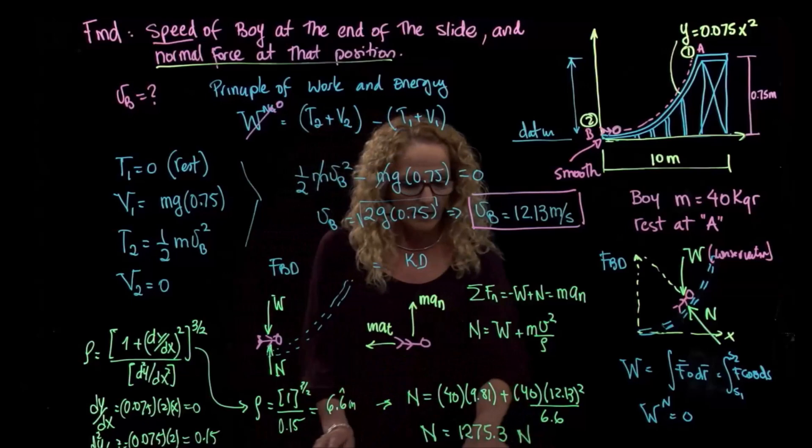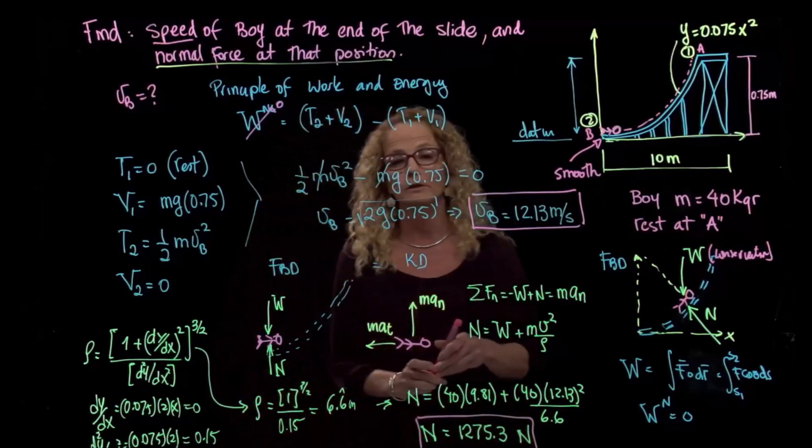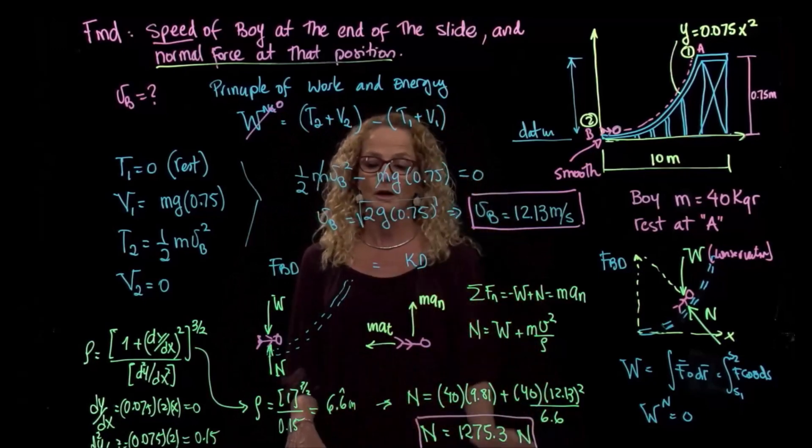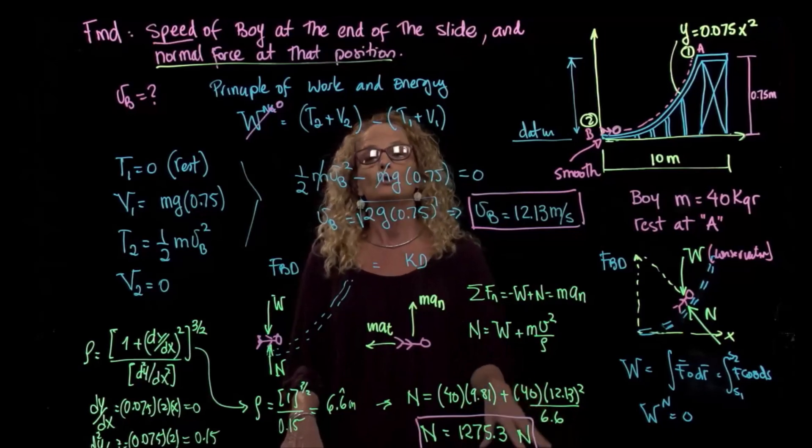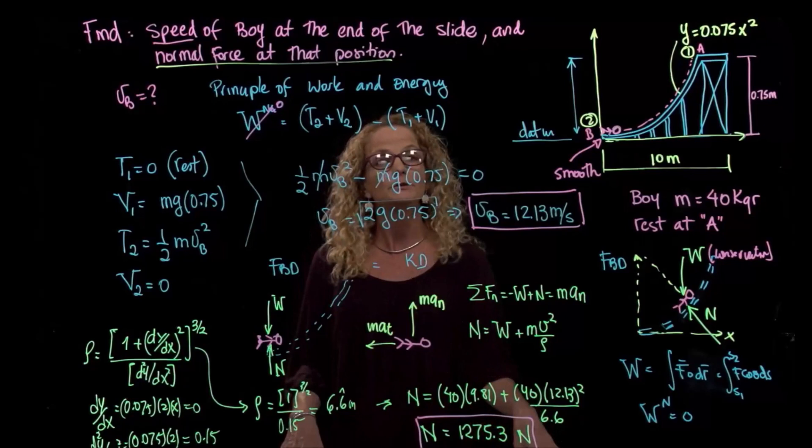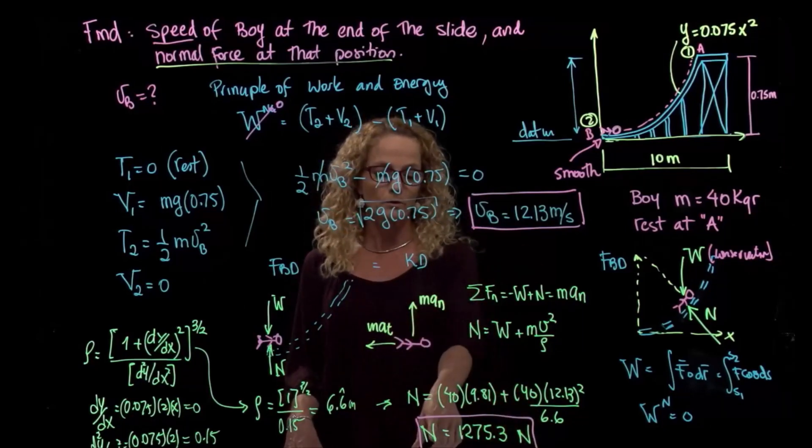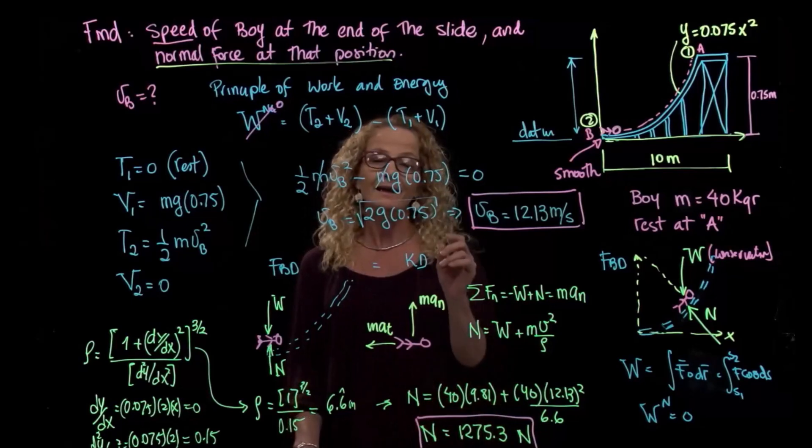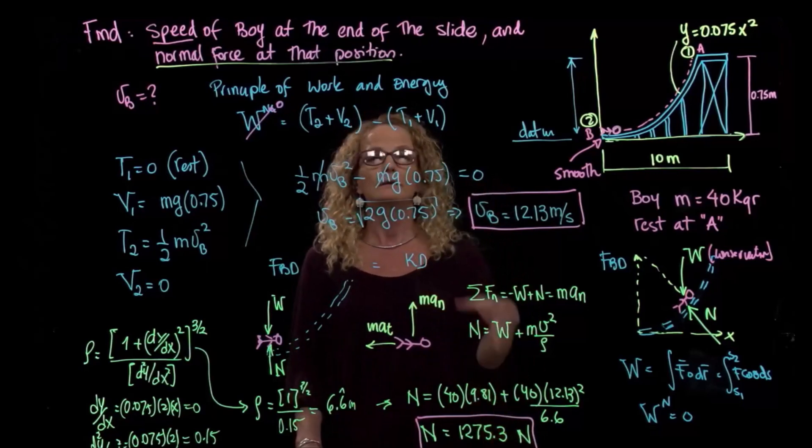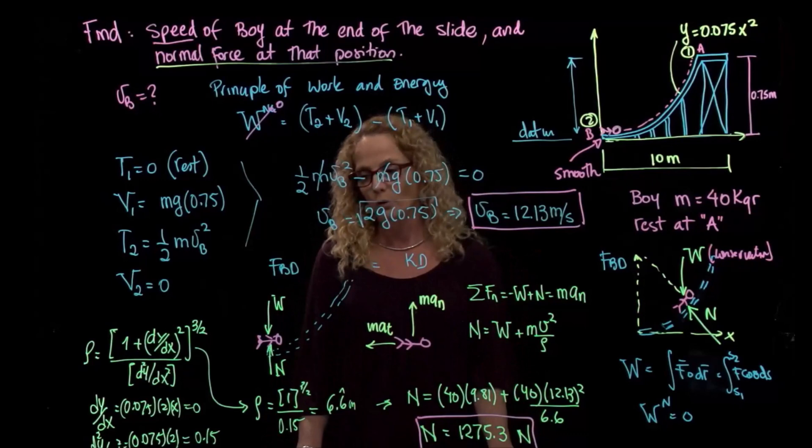So I want you to compare the problems that we are doing for this chapter with the problems that we did for the previous chapter, which is analysis of kinetic particles using the equation of motion, force equals mass times acceleration. We had a very similar problem that allowed us to calculate the normal force. And in that case, in the problem that we solved using the equation of motion, the velocity was given. In this case, we were able to find the velocity and then further calculate the normal force.